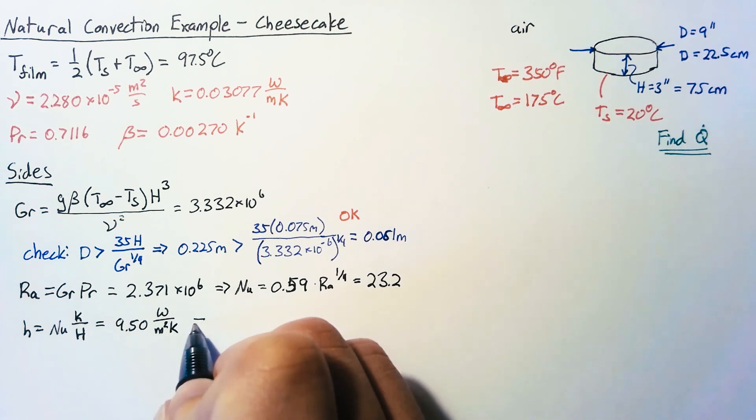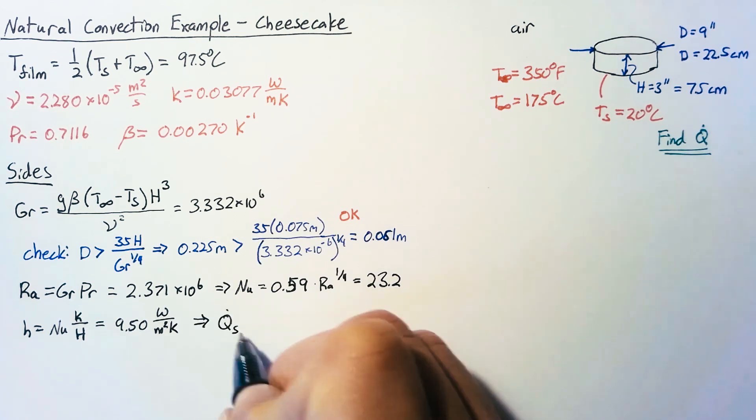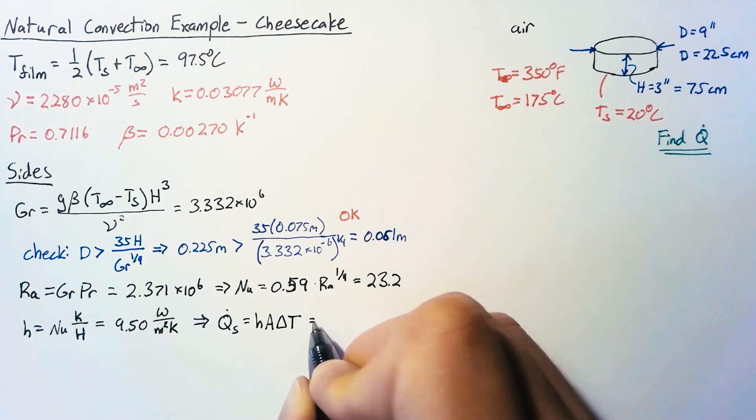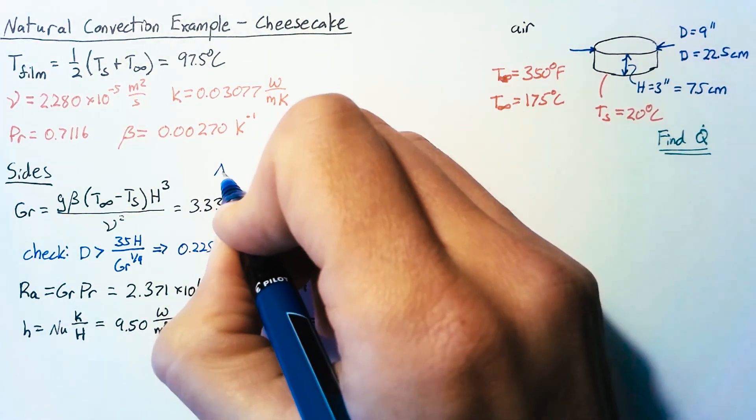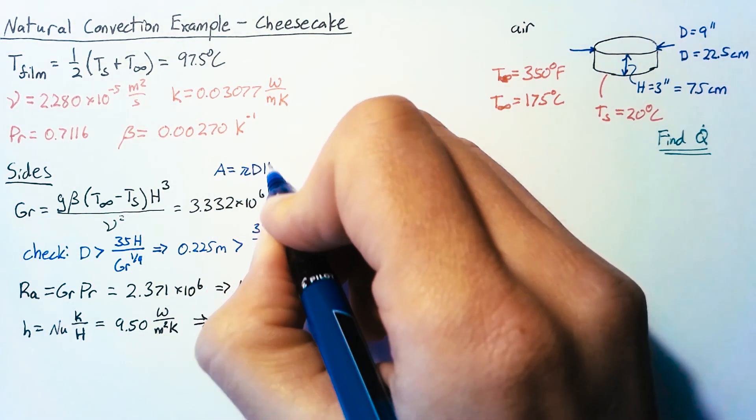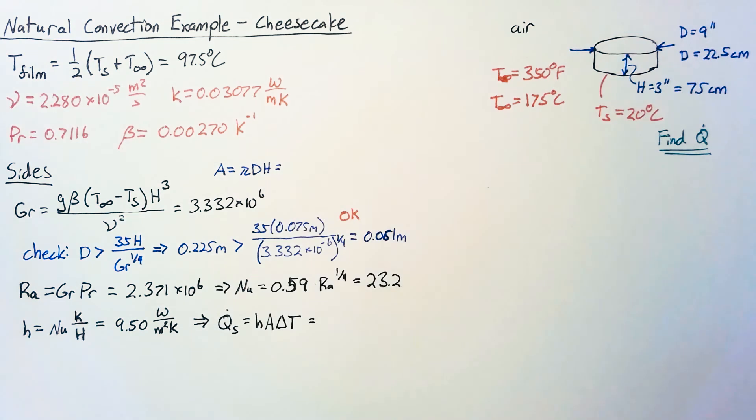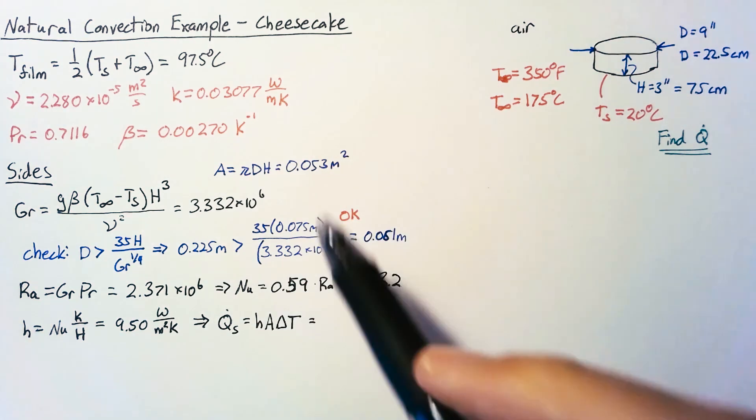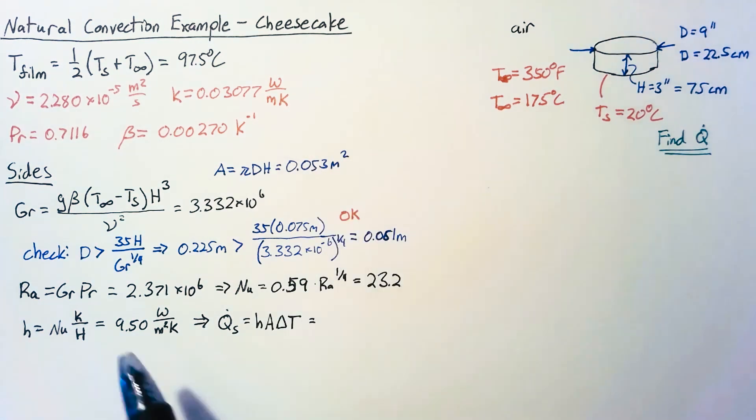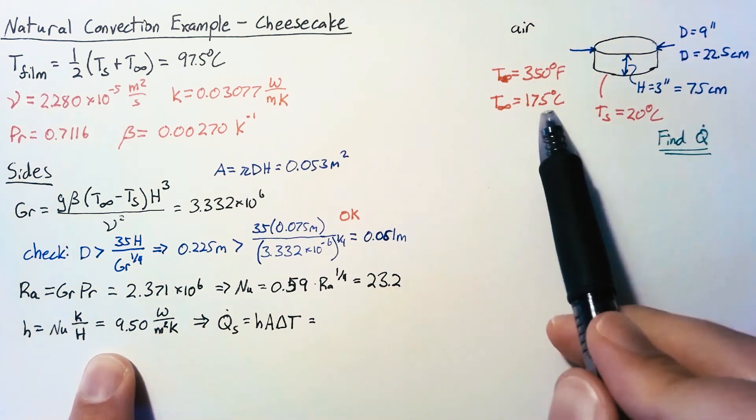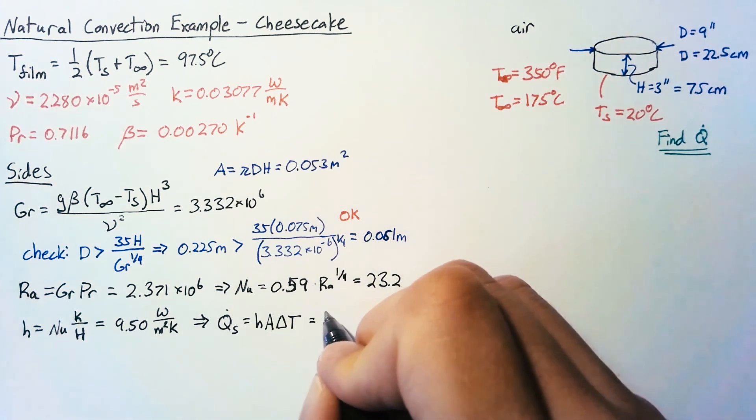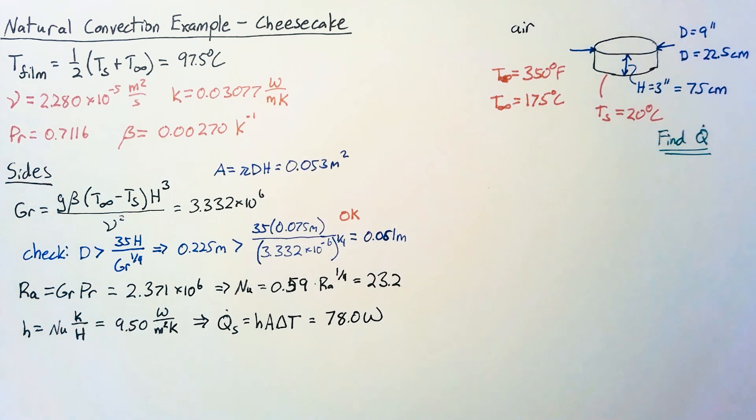Plugging our Nusselt, the K value and H in we end up with 9.50 watts per meter squared kelvin. Then finally plugging that in we get our Q dot for the sides specifically. It'll be equal to this H value multiplied by A delta T and we know that the area for our sides here is just pi times D times H which we can calculate as 0.053 meters squared. So our area multiplied by our H value multiplied by delta T which is this 175 minus 20 gives us a heat flow of 78.0 watts and this is from the air into the surface.